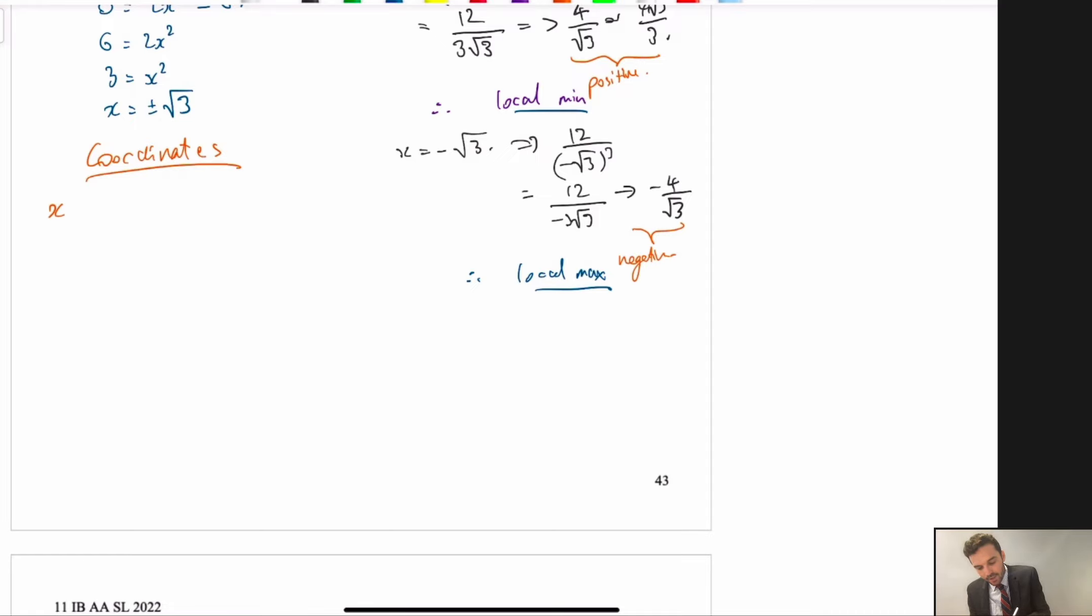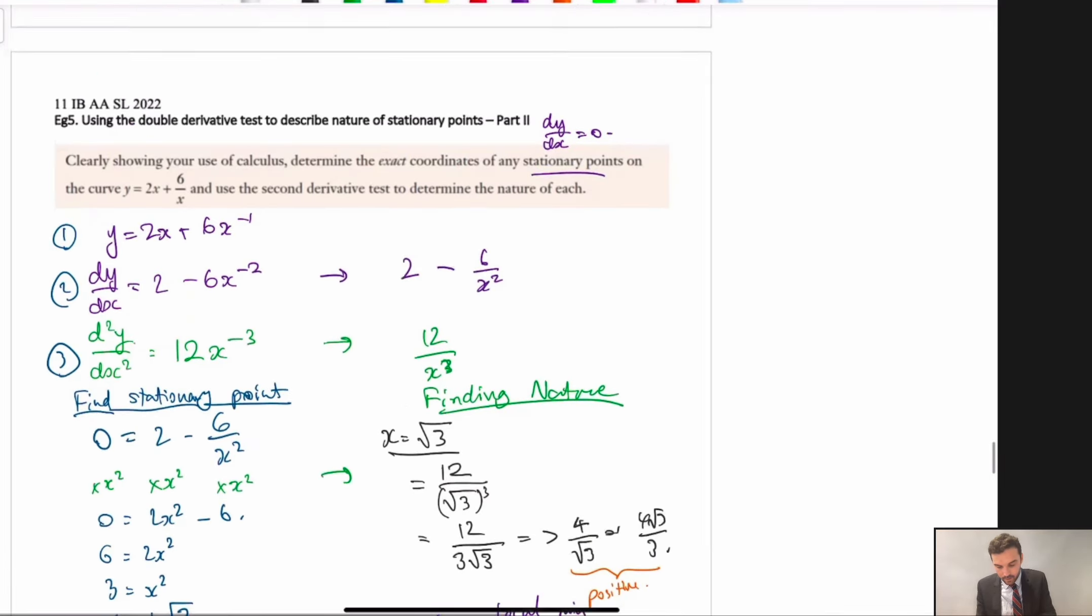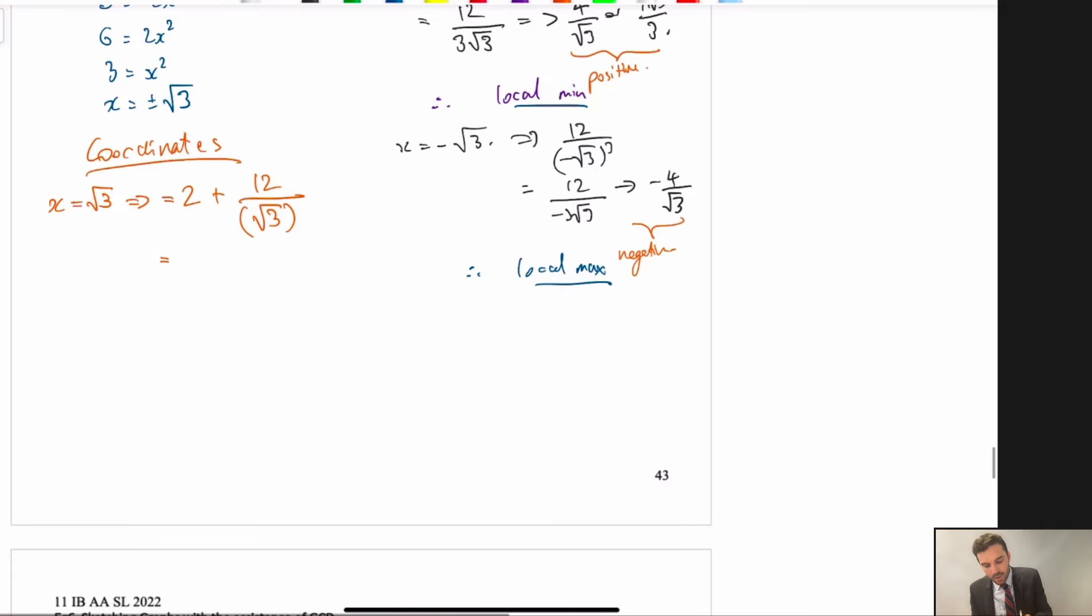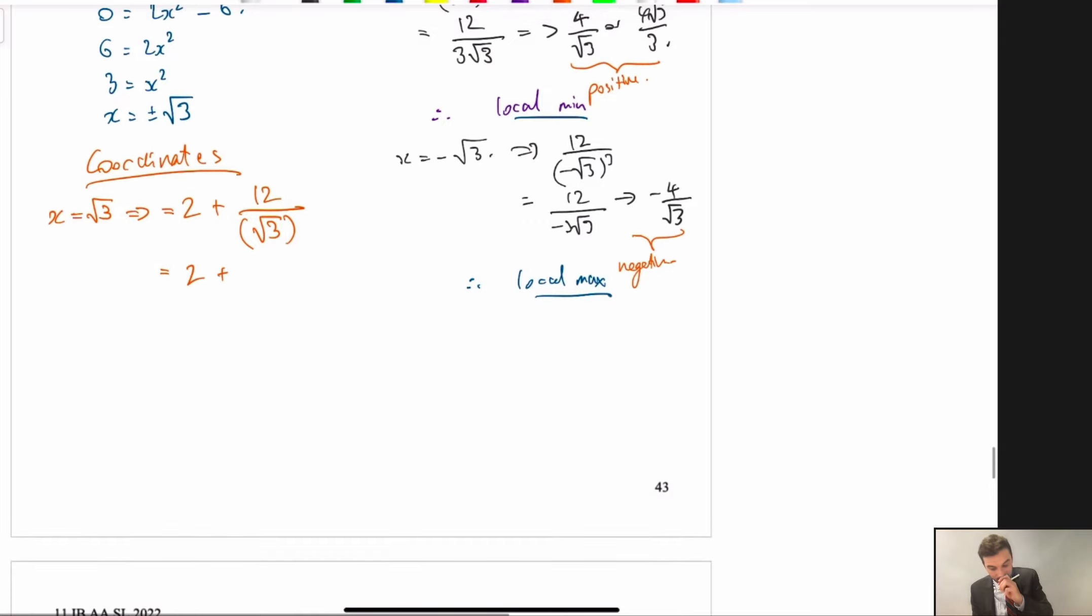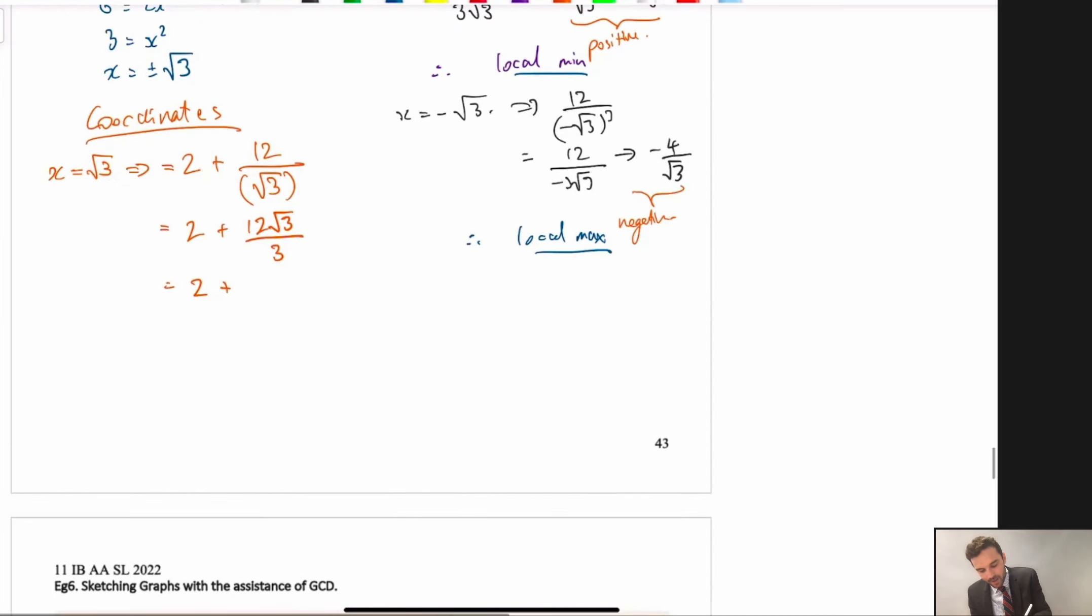So, let's do it for x is equal to root 3. Here we go. We've got 2 plus 12 on root 3 all. So, we're just going to double check my value. It's just on root 3, right? Yeah. So, we're just plugging into the original formula. Now, we can rationalize the denominator if we want. So, it's going to be 12 root 3 on 3, which becomes 2 plus, oh, it stops—4 root 3. That's our first coordinate. So, that's our y value, okay? So, we can write that out as root 3, 2 plus 4 root 3.